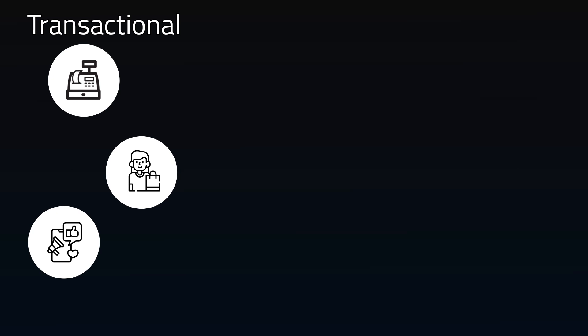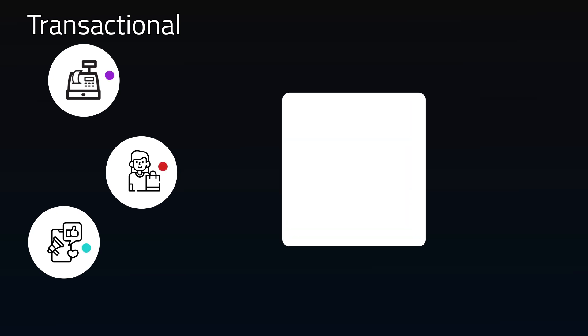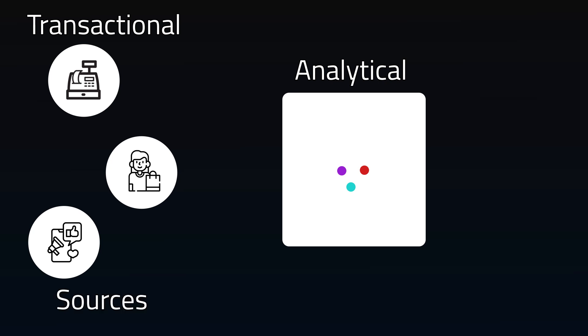So the next step is extracting that data from different sources and moving it into an analytics platform. In this case, the transactional database acts as a source. But as the data finds its way into the analytics platform, the concept of a database pops up again — you're going to have to store that data. Now we have a structure to store information within a data warehouse.